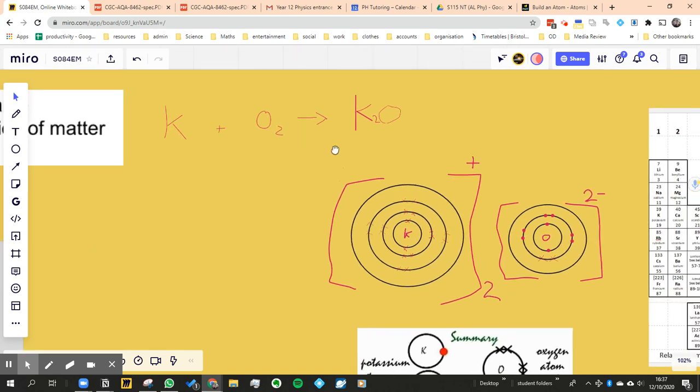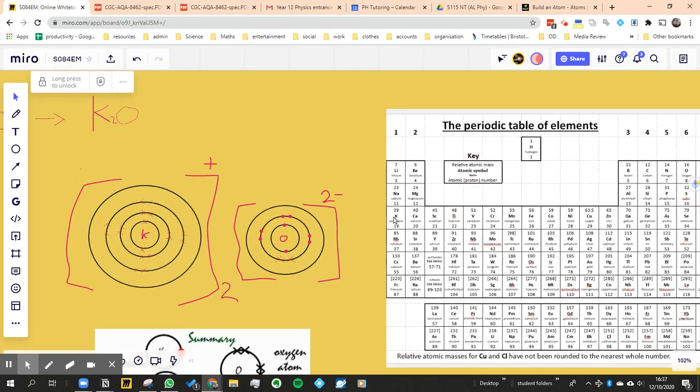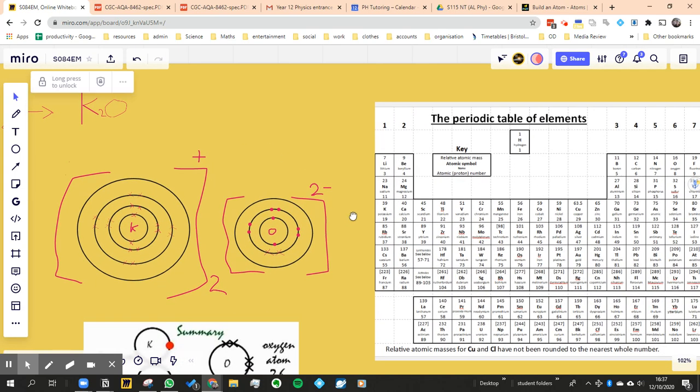To do that, we have to think what charge the ions would be. By looking at the periodic table, we find potassium in group one, so that means one electron in the outer shell, and therefore it would lose that one electron to form a full shell.